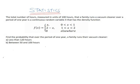We are having a question on the cumulative distributive function of a continuous random variable. The question states that the number of hours, measured in units of 100 hours, that a family runs a vacuum cleaner over a period of one year is a continuous random variable that has this density function written.